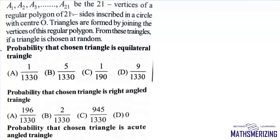Now here the question is let a1, a2, a3, up to a21 be the 21 vertices of a regular polygon of 21 sides inscribed in a circle with center O.